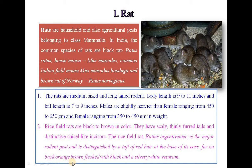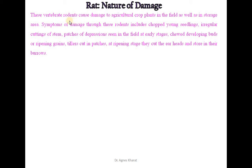Fur on the back is orange-brown, flecked with black, and a silvery white ventrum. These vertebrate rodents cause damage to agricultural crop plants in the field as well as in the storage area. Symptoms of damage include chopped young seedlings, irregular cuttings of stem, patches of depression seen in the field at early stages, chewed developing buds or ripening grains, and tillers cut in the patches at ripening stage. They cut the ear heads and store them in their burrows.